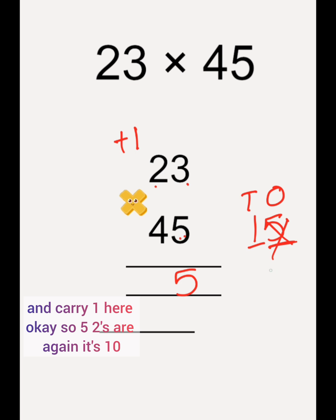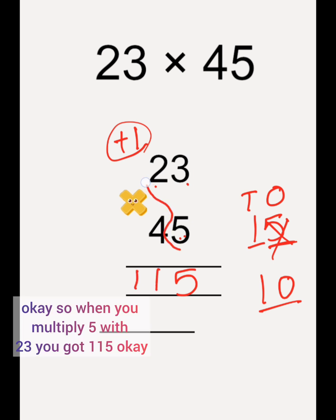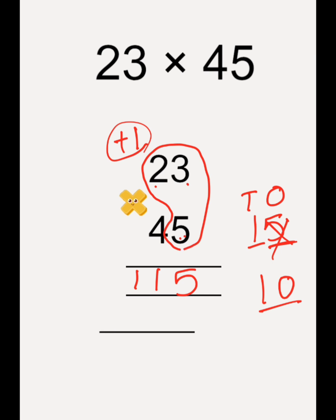5 2's are again it is 10, so 10 plus 1 is 11. So when you multiply 5 with 23, you got 115.